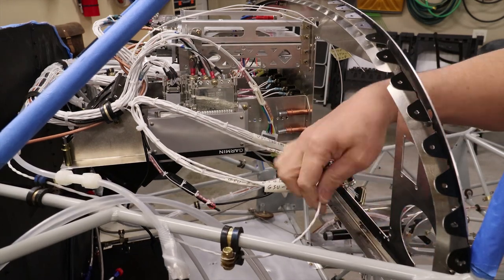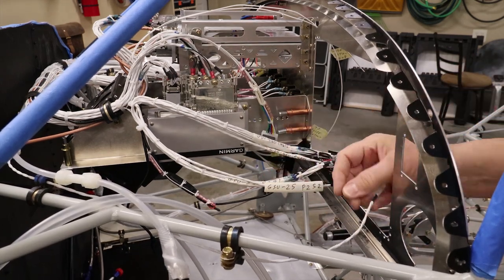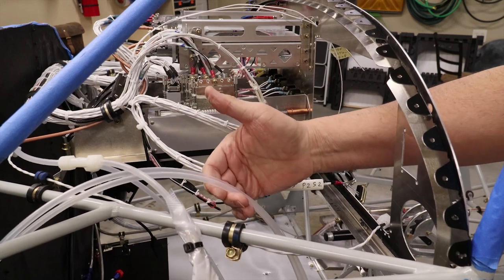This is the ELT connector, while the pitot, static, and AOA tubes are provided with big loops to avoid any kinking.